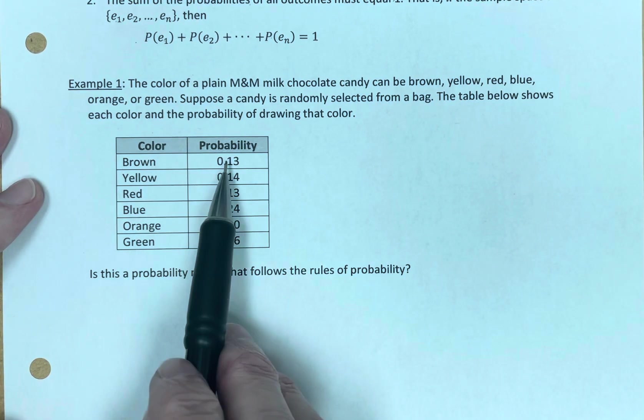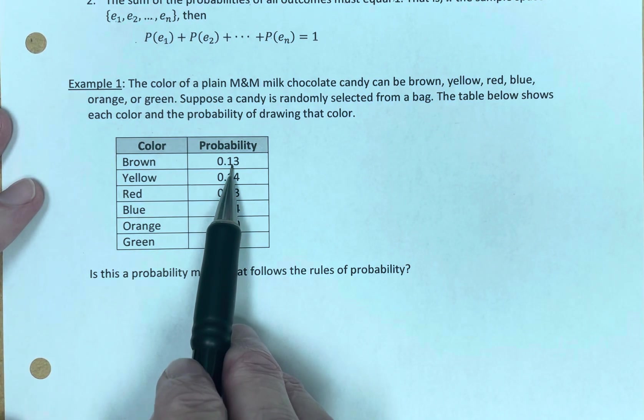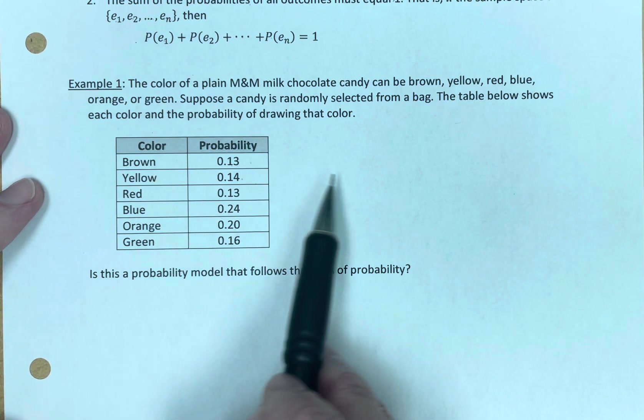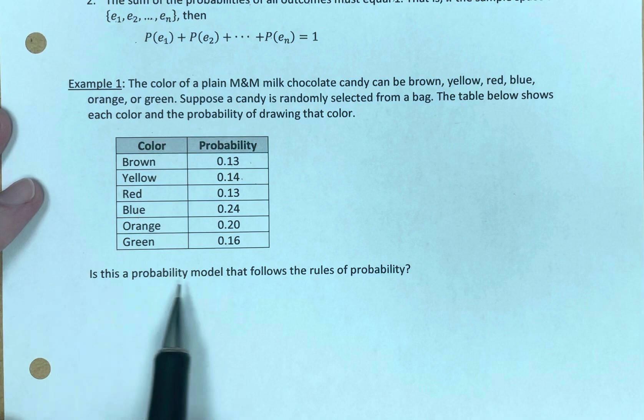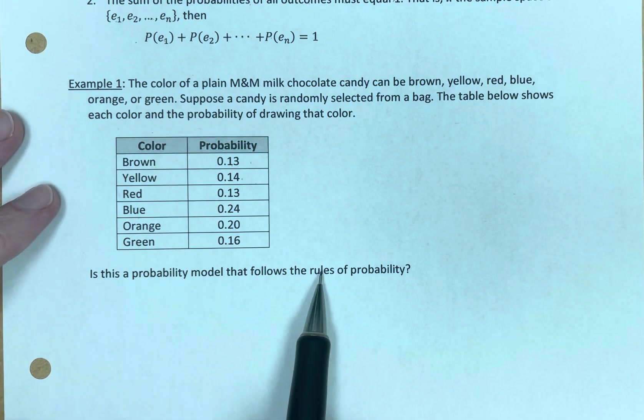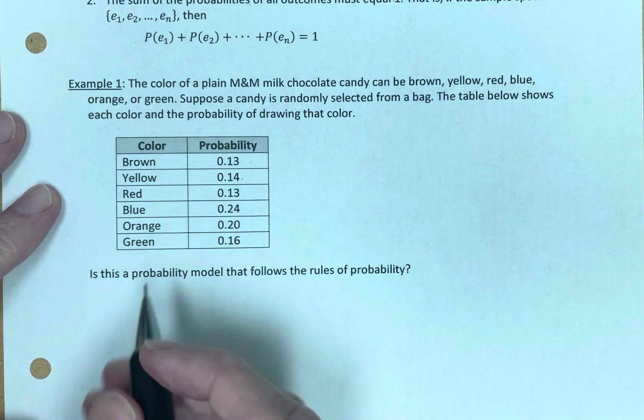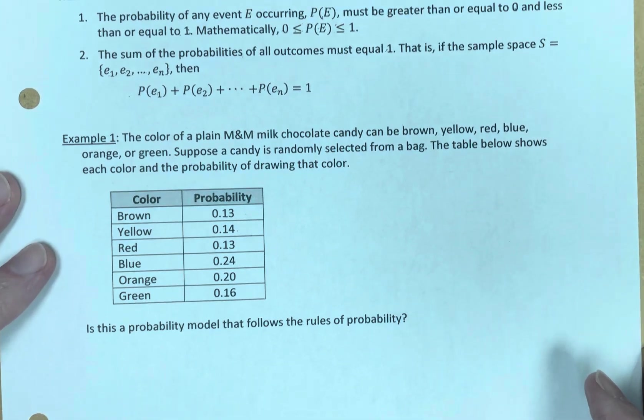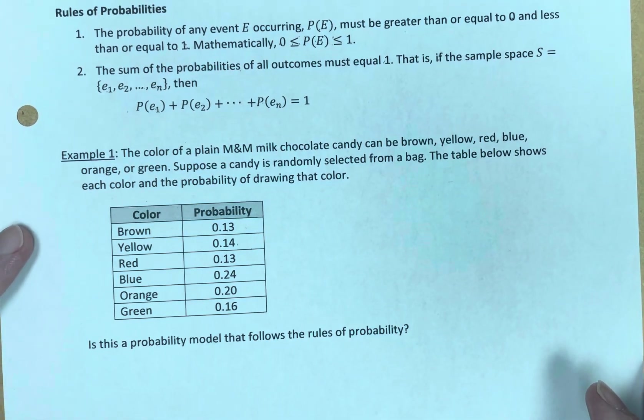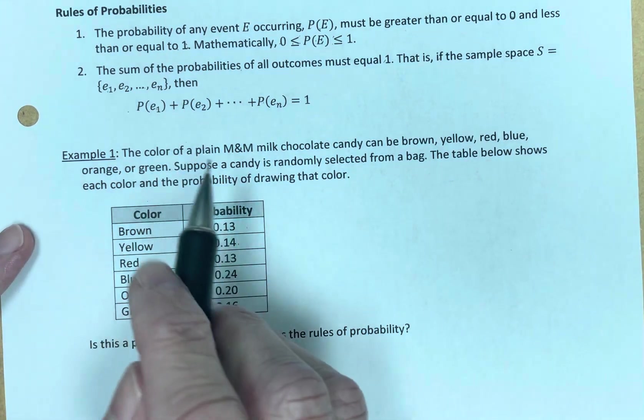So the color brown has a probability of 0.13, which is also 13%, yellow, 0.14, et cetera. Is this a probability model that follows the rules of probability? Let's go up to here. These are our rules. Is this a model that follows those rules?